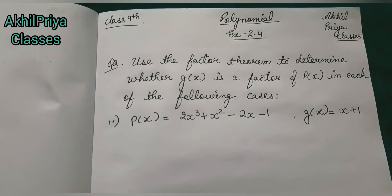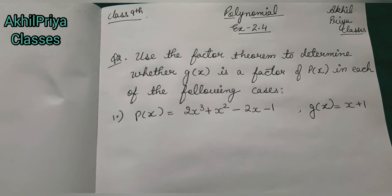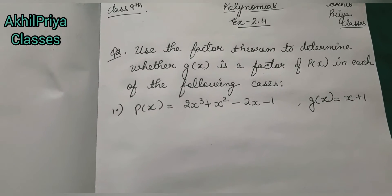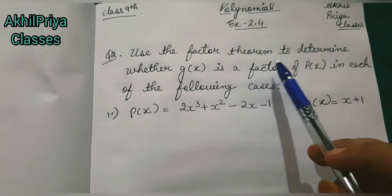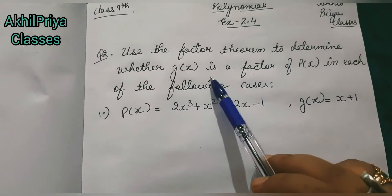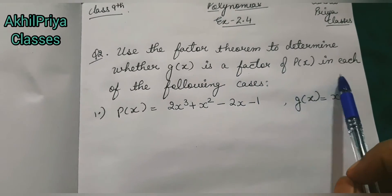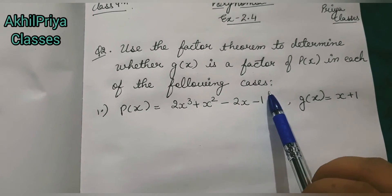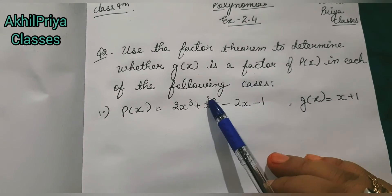Today we are going to do question number 2 of exercise 2.4. Our question is: use the factor theorem to determine whether g(x) is a factor of p(x) in each of the following cases. As you know that this question has many parts.